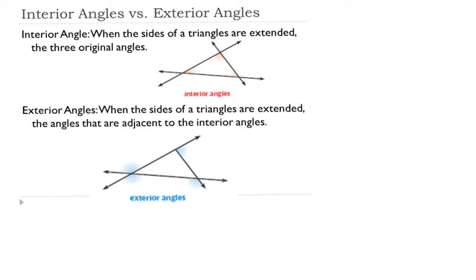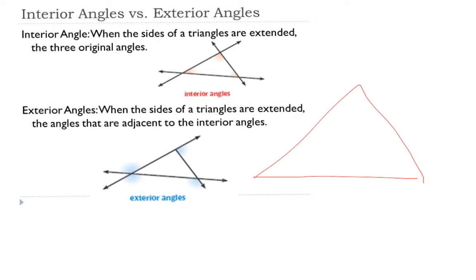You also need to know the difference between interior and exterior angles. Interior angles are the original angles that are inside the shape — even if you extend the sides, they remain those inside angles, highlighted here in red. Exterior angles are created when you continue the shape's sides outward; they are the angles outside of the shape that are formed.